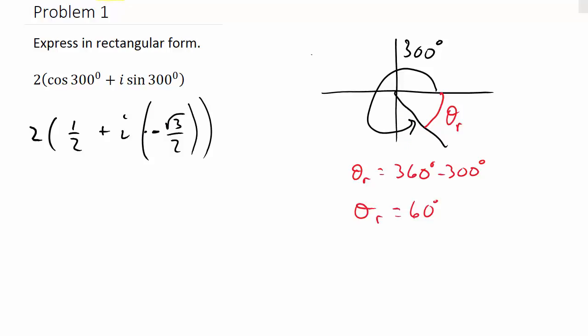And then we can distribute the 2. And so that's going to give me 1. And then that's going to be minus i square root of 3, because the 2's cancel there. And that would be rectangular form.